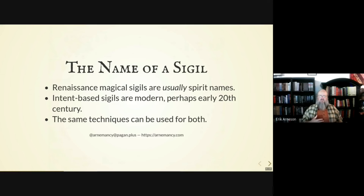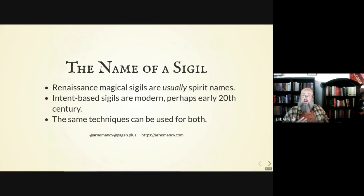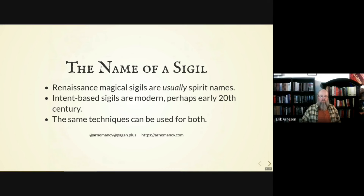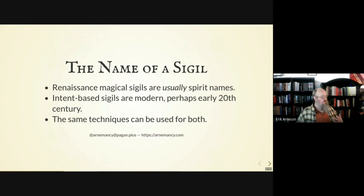We'll see later on that Spare's method for making chaos magic sigils, while it was certainly innovative, it possibly didn't just come out of nowhere — he might have been inspired by some earlier techniques. One of the things worth exploring is taking some of these Renaissance techniques and using them the way Spare would have used chaos magic sigils, so encoding intent and not necessarily spirit names. Especially since a lot of the old sigil-making techniques are more complicated and have math, and so they're more fun.